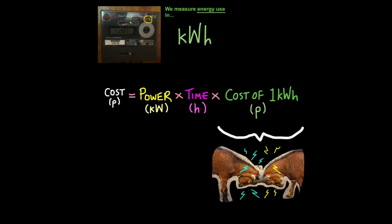So electrical companies compete over the cost of one kilowatt hour. The lower the cost, or tariff, the more popular that electricity supplier is likely to be. Okay, so let's put this equation into action.